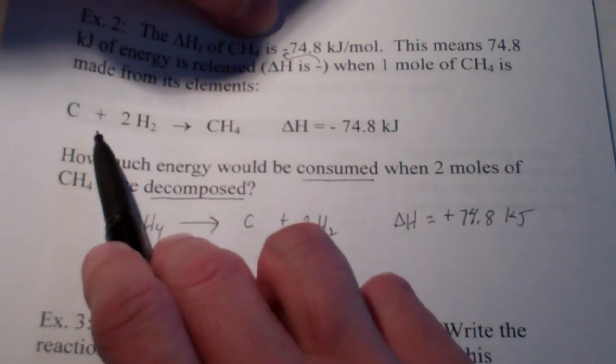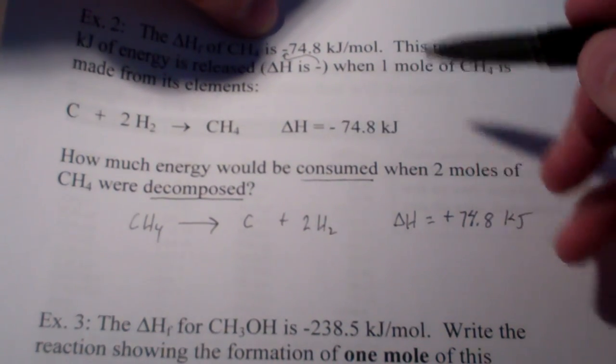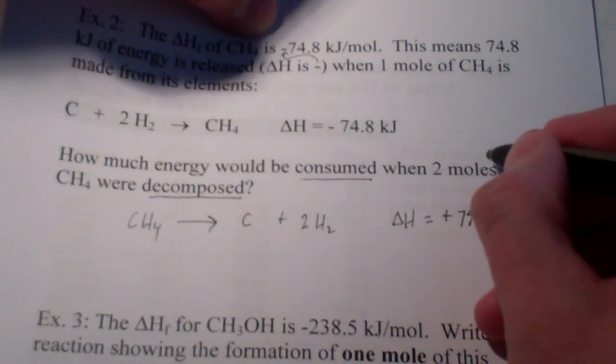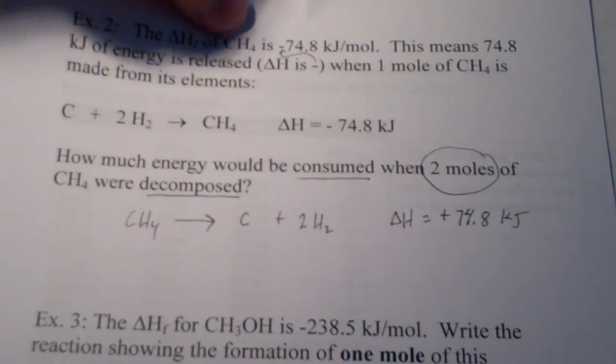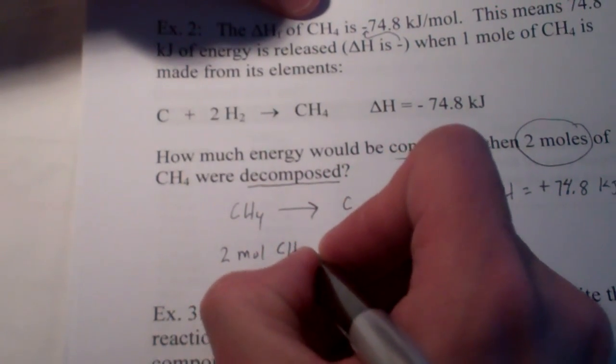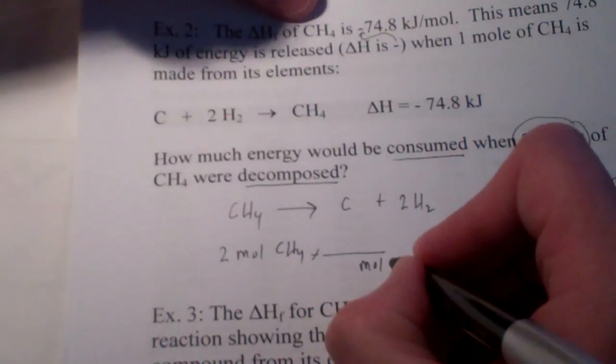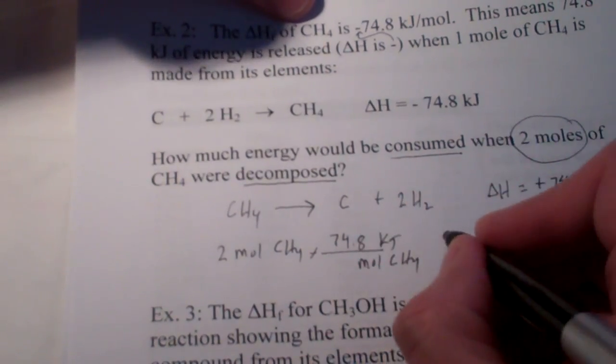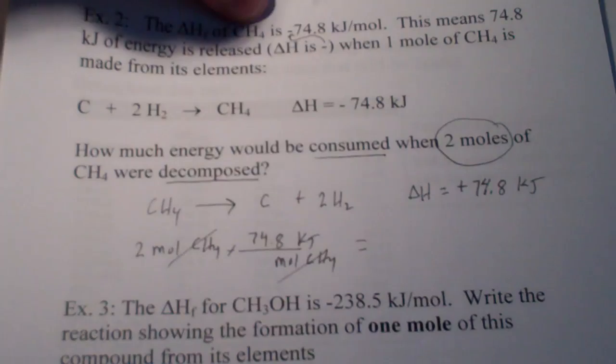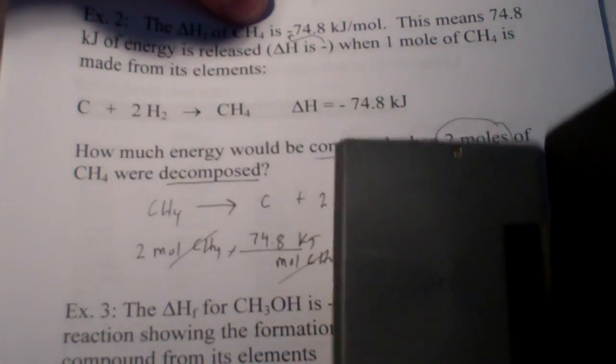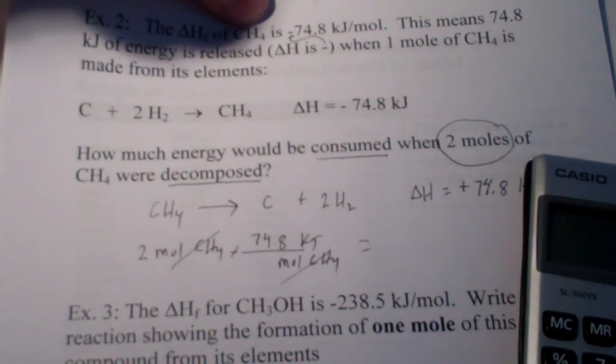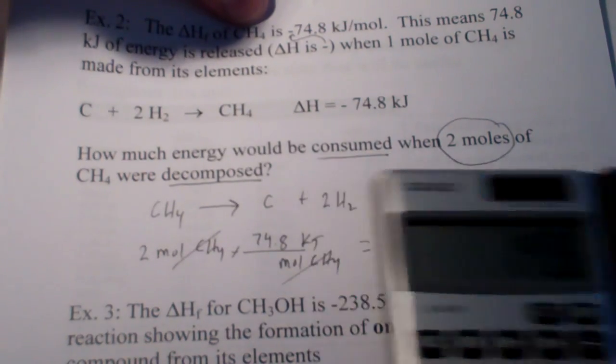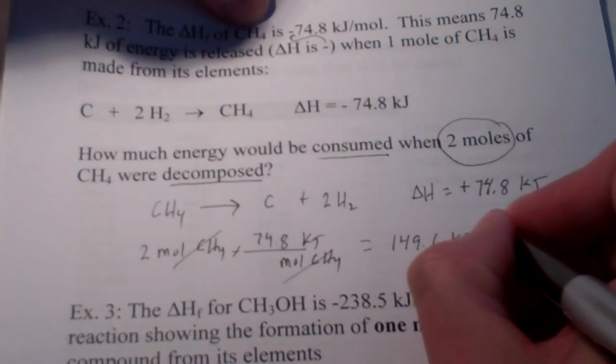So, let that be a lesson to you. When you write a reaction backwards, delta H's sign has changed. The magnitude's the same, but the sign has changed. Now, I still haven't answered my question, because my question is for 2 moles of CH4. So, we have 2 moles of CH4 being decomposed. We're going to go from moles of CH4 to kilojoules. And, isn't it 74.8 kilojoules per mole? So, 2 times 74.8, oh, what the heck, we'll be lazy. We can use our cheap calculator. And, we have 74.8 times 2 gives me 149.6 kilojoules. This would be my answer.